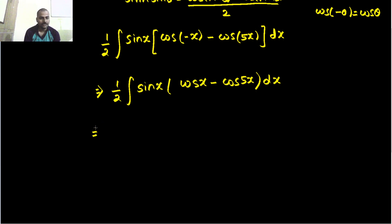Inside I have sin x cos x minus 1 half sin x cos 5x. So if you multiply and divide by 2, then inside is nothing but sin 2x only.